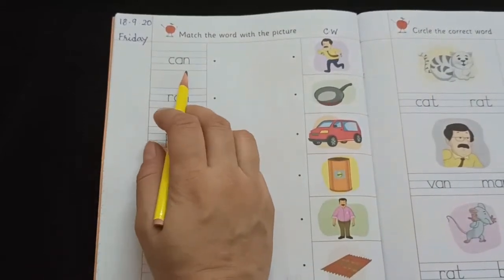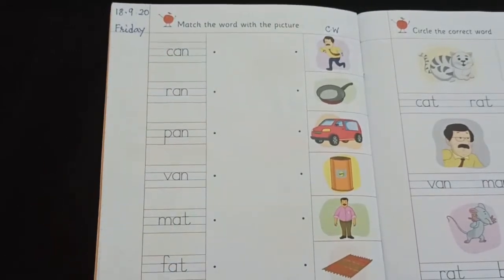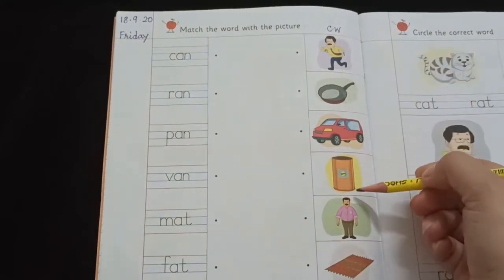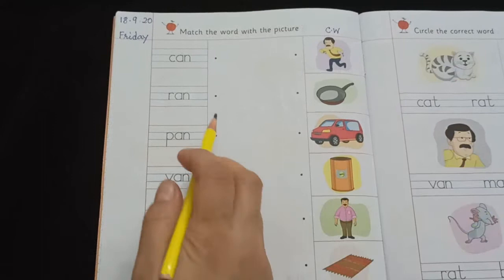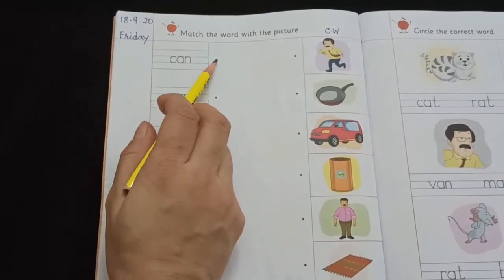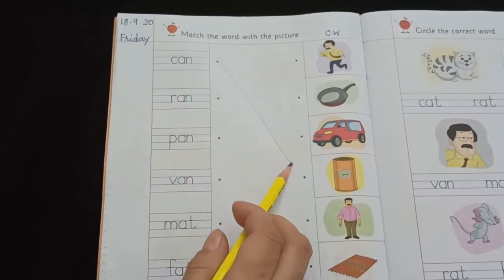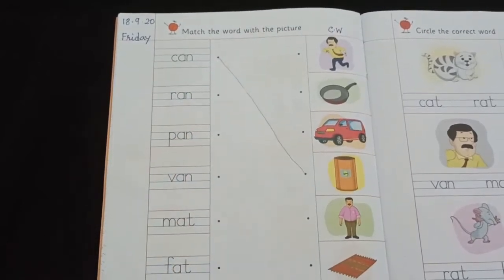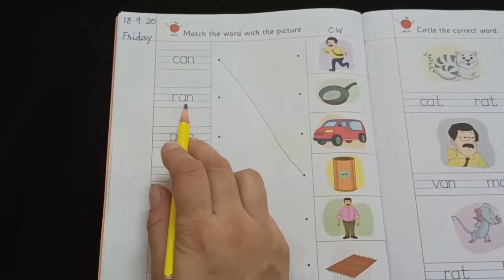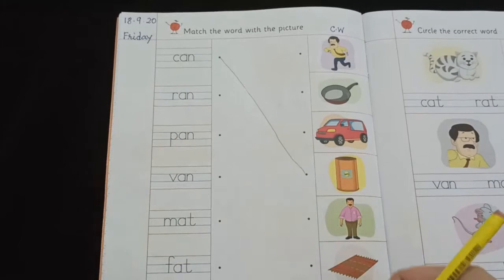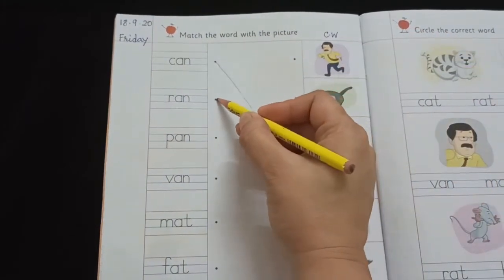The first word is C-A-N, CAN. Now you have to find the picture of CAN. Where is picture of CAN? Yes. So now draw a line from here till here. Now the second word, R-A-N, RAN. And where is picture of RAN? Yes. So draw a line.